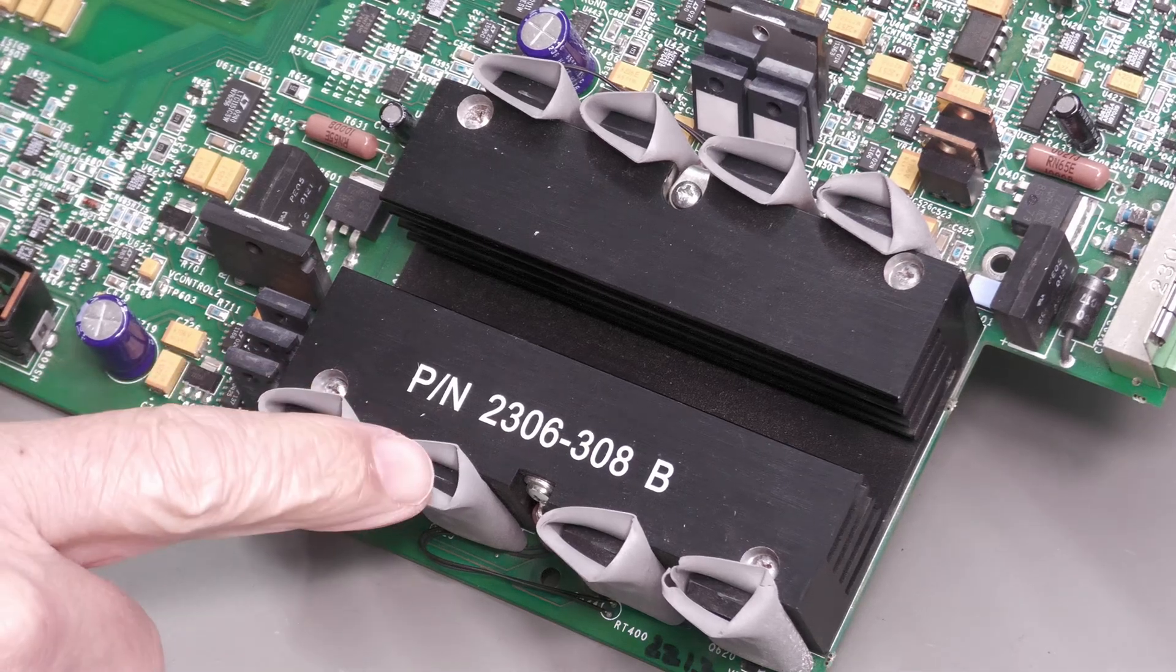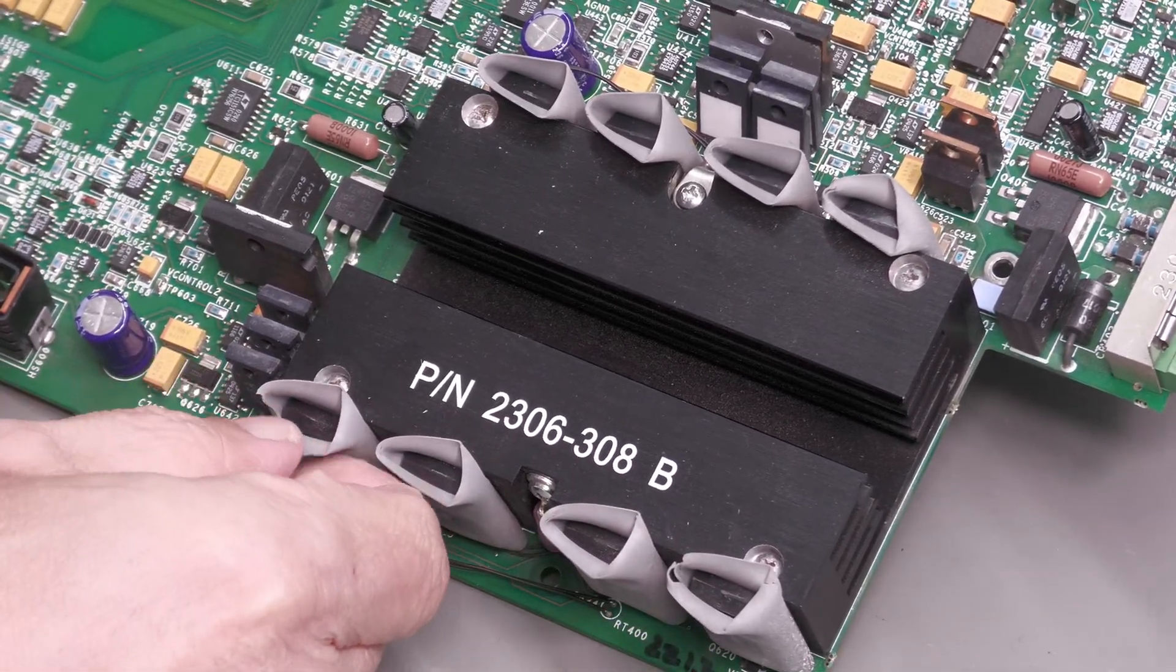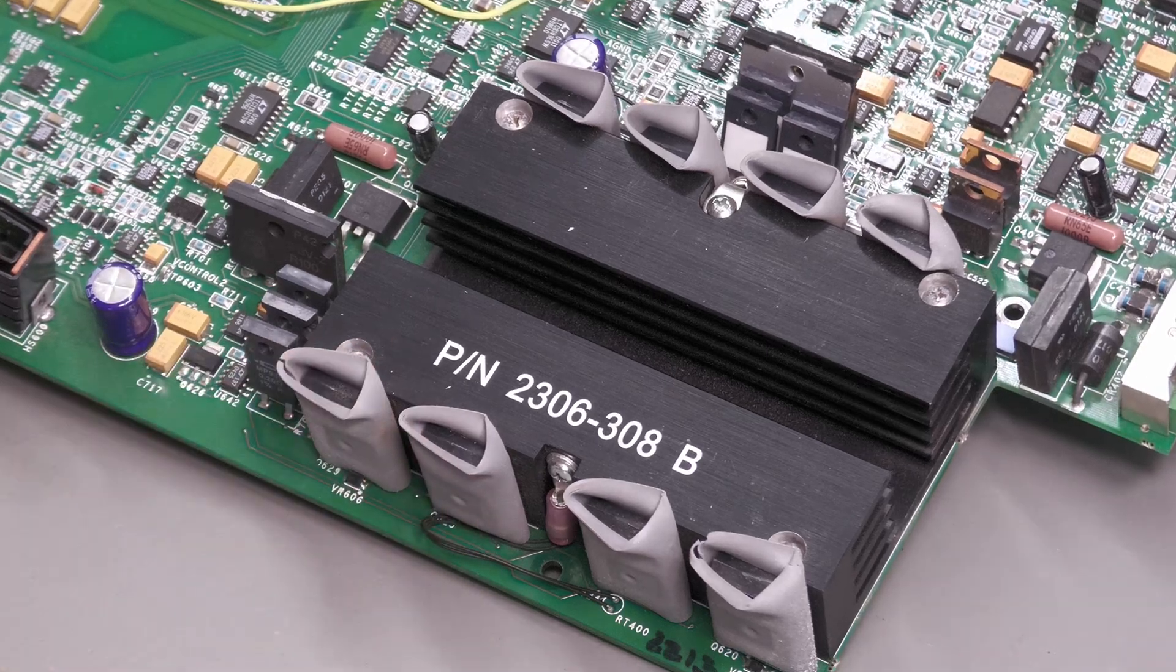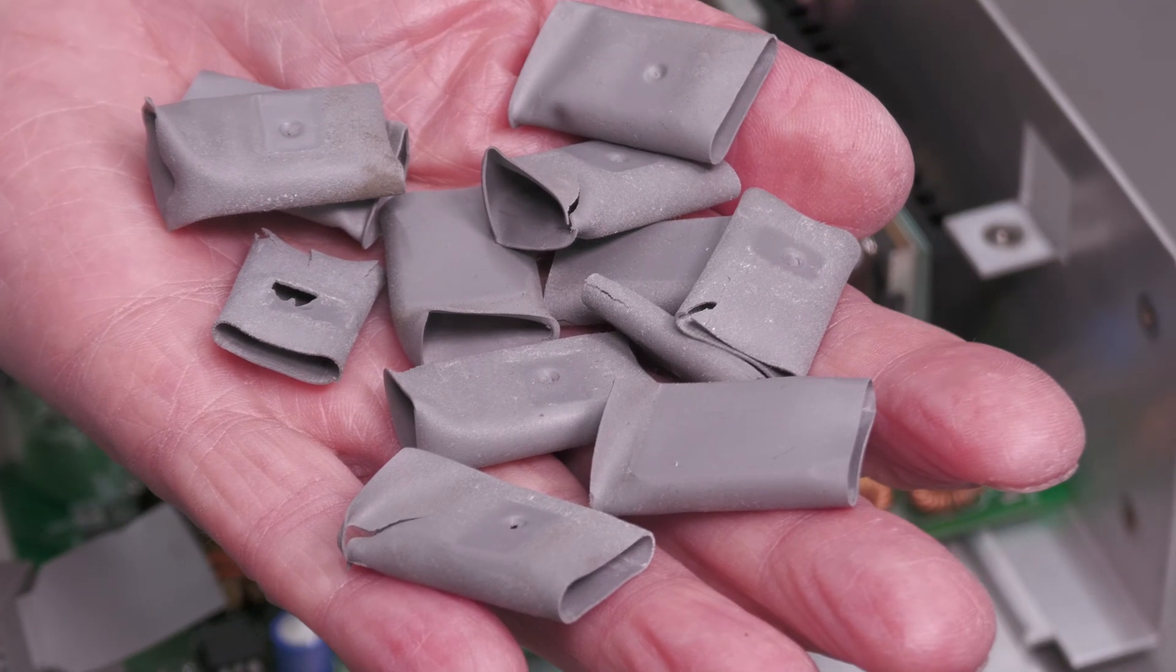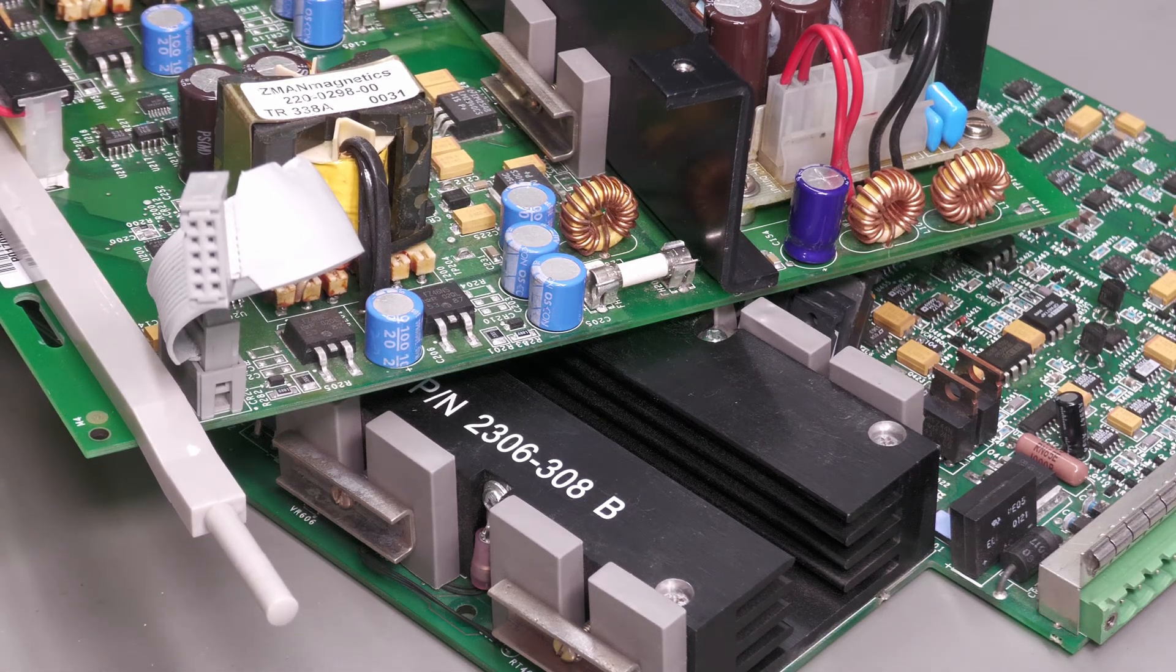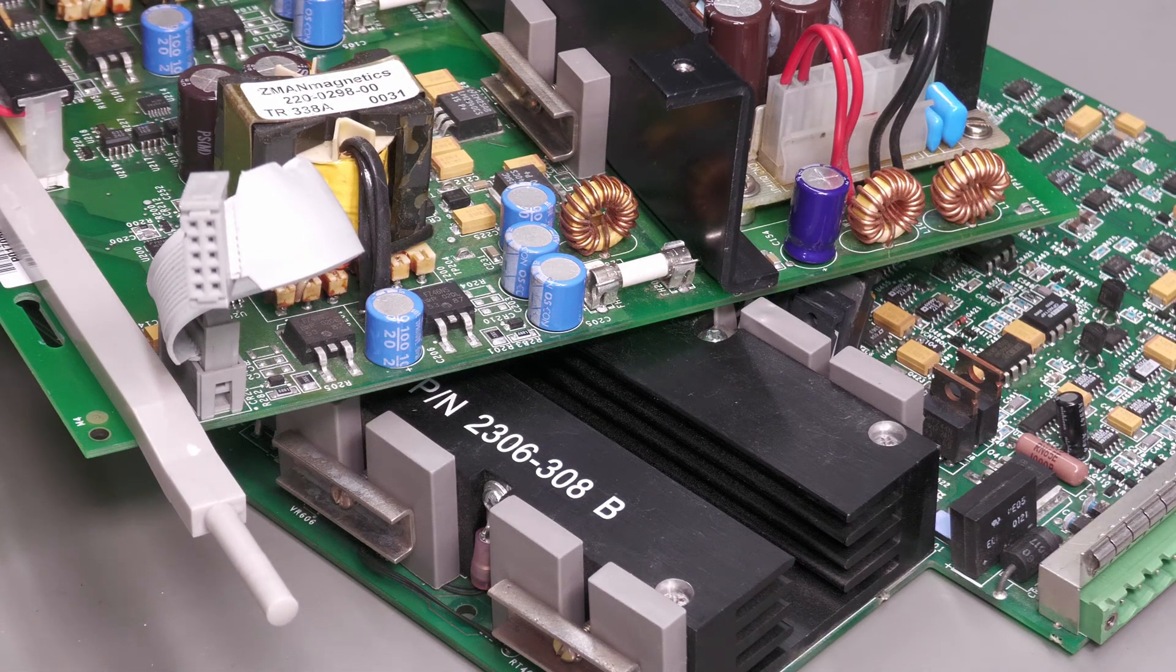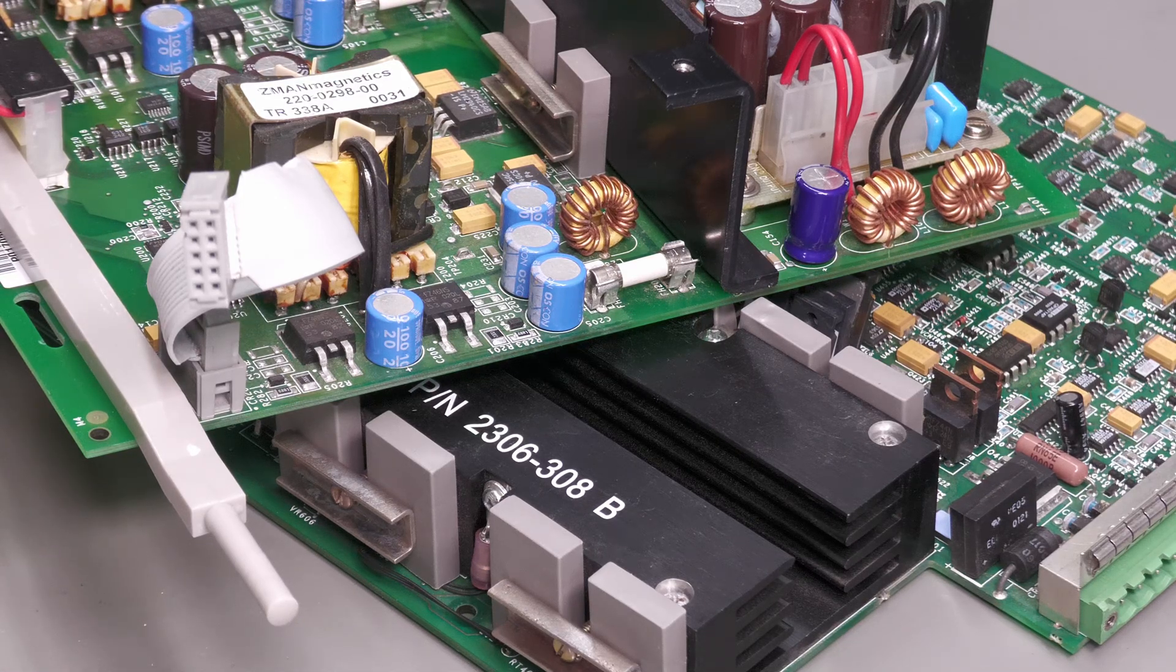And on the main analog board, these ones here are in a pretty similar state also. They're just all hard and crusty, so I'll replace them as well. And there's the old ones all removed. Well, there we go, all in place and looking good. So I'll just measure them, make sure there's no short circuits onto the heat sink and I'll reassemble the boards back into the case.